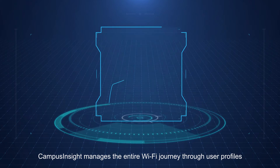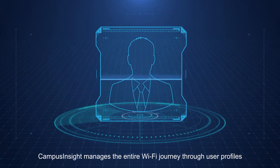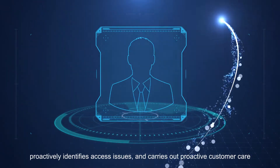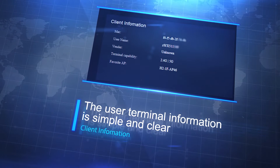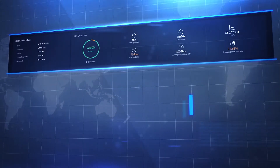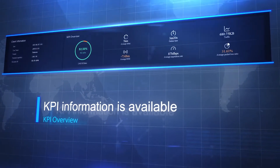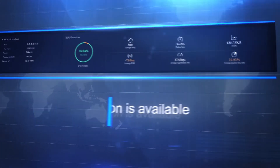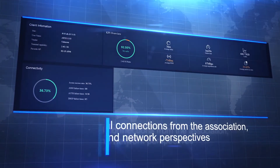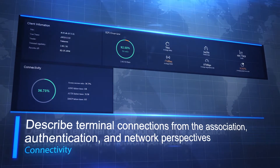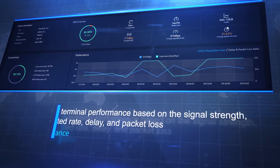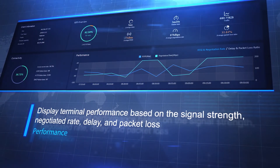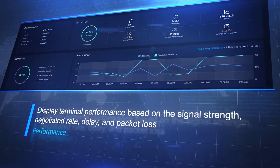Campus Insight manages the entire Wi-Fi journey through user profiles, proactively identifies access issues, and carries out proactive customer care. The user terminal information is simple and clear, with KPI information available. Terminal connections are described from the association, authentication, and network perspectives. Terminal performance is displayed based on signal strength, negotiated rate, delay, and packet loss.